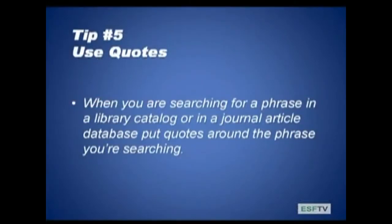Tip number five is use quotes. When you're searching a phrase in a library catalog or in a journal article database, put quotes around the phrase you're searching. Using quotes can be used in any kind of online search tool — a library catalog, journal article database, and on internet searches. So if I have words next to each other, like organic farming, I can put quotes around it. If I'm searching for hydraulic fracturing or landscape architecture, I can put quotes around those phrases too. Use quotes when you have words that are next to each other — that will help narrow your search.